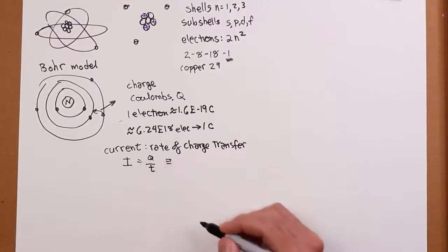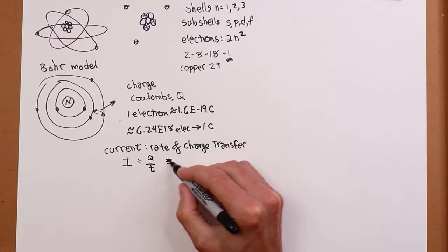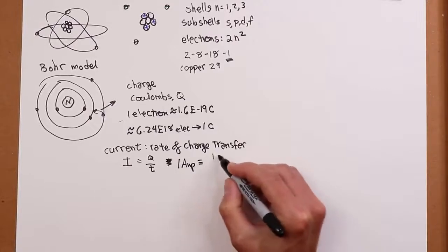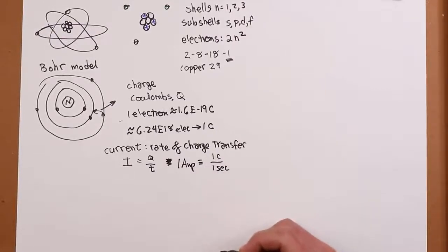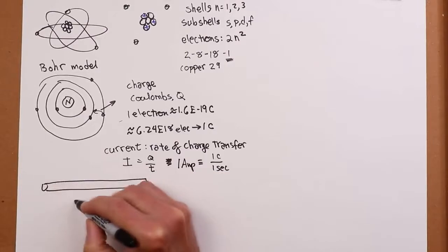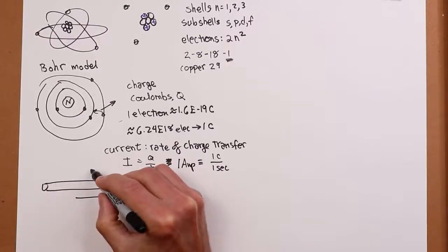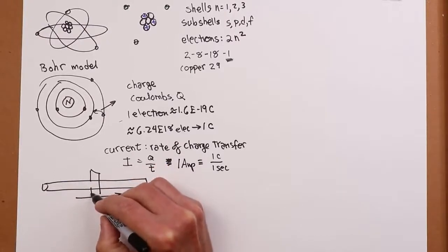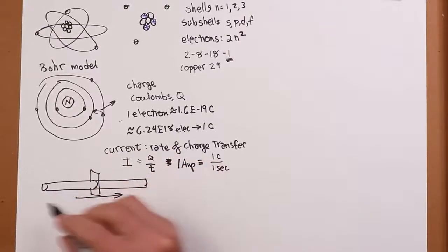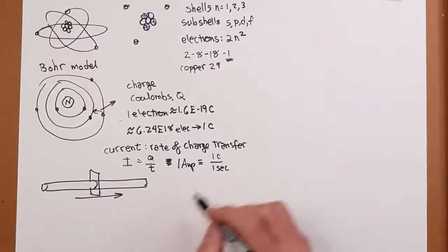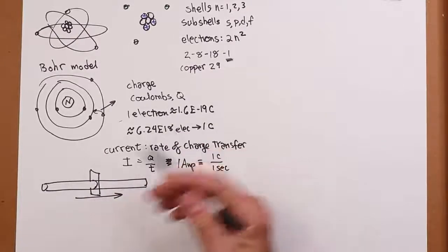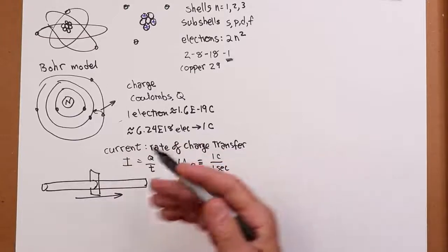So, we can then define one amp of current as one coulomb per one second. So if you could imagine here's a wire and there's a current flowing through it. Now imagine sort of cutting this wire, and if you could count, like you get a little toll gate here, and you can actually count the electrons as they were going through, you could, knowing the charge on each one, you could figure out what the total charge is in a second or a minute or whatever, divide it out and you could come up with a current.